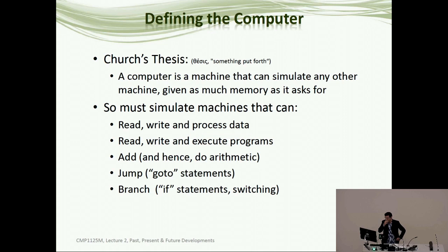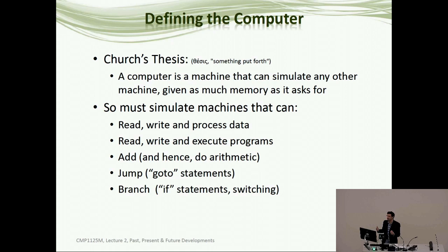This includes a lot of things: you've got to be able to read, write, and process data, but you've also got to be able to read, write, and process programs — especially the writing part. A computer has to be able to add, and from addition you can build up the rest of arithmetic. It has to be able to jump — to have a go-to statement. And importantly, it has to have a conditional jump called a branch, which is an if statement: if something is true in the state of the computation, go to a different part of the program.